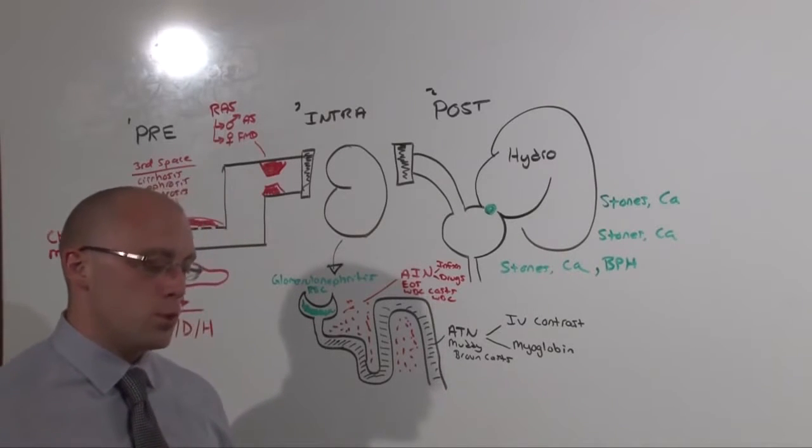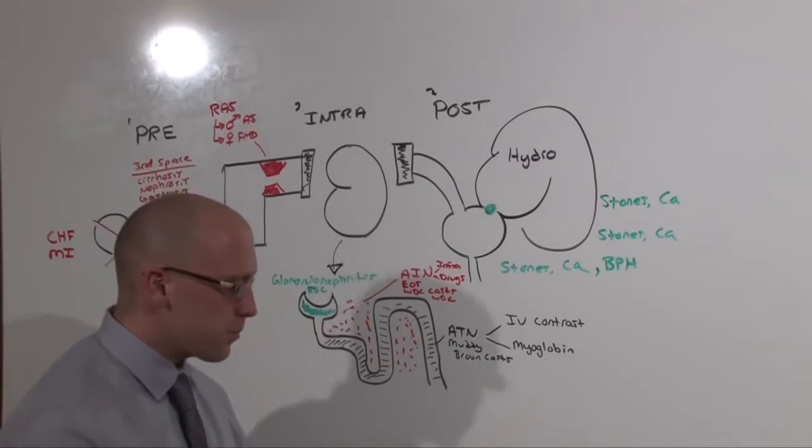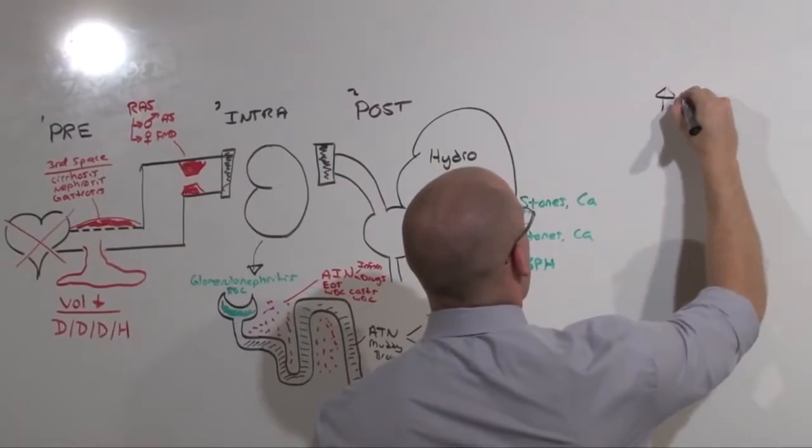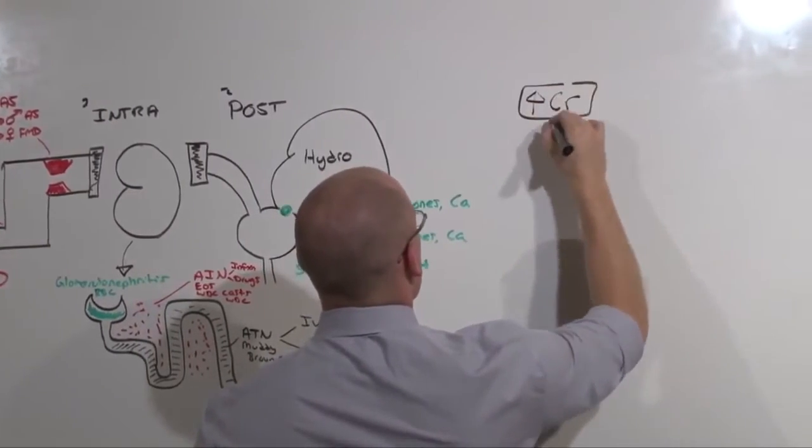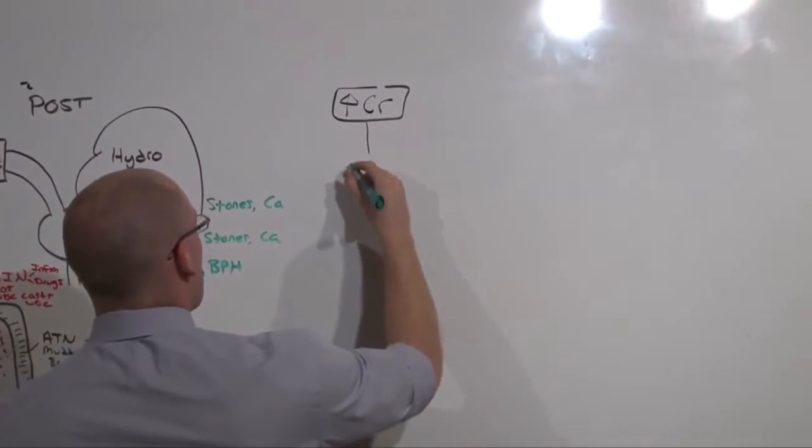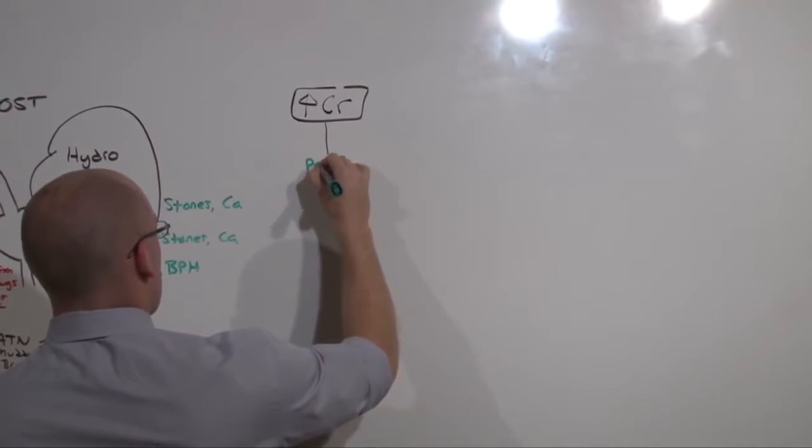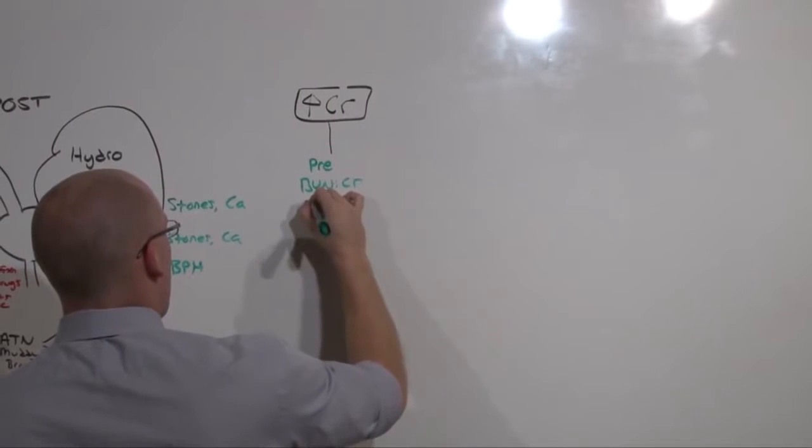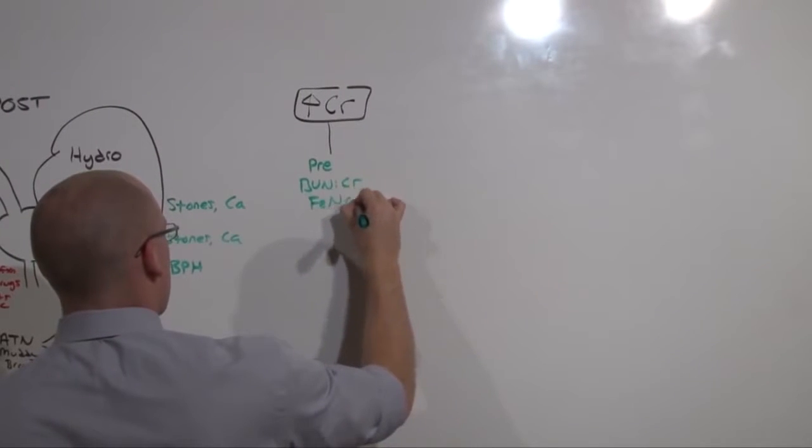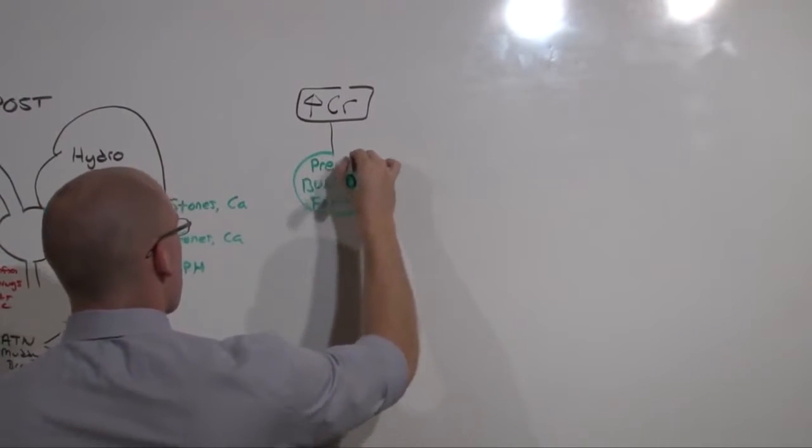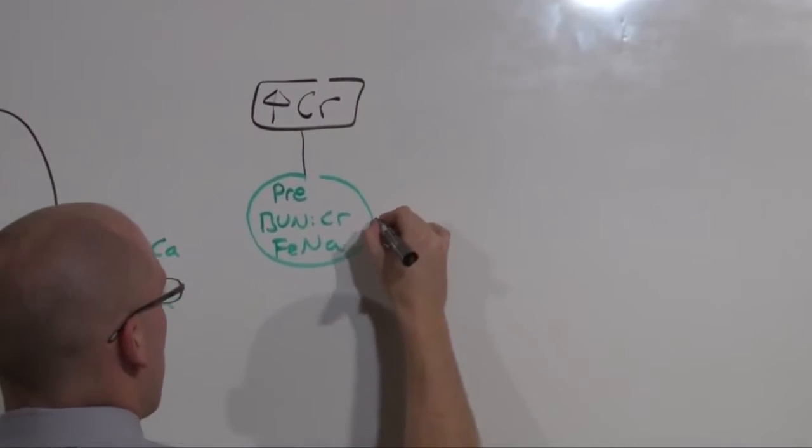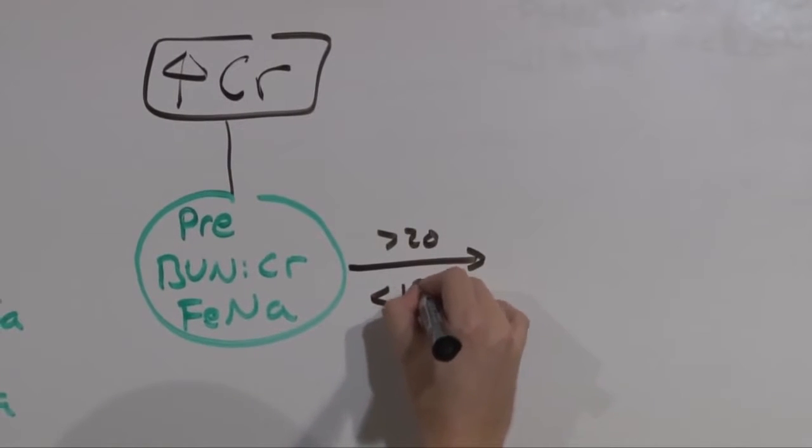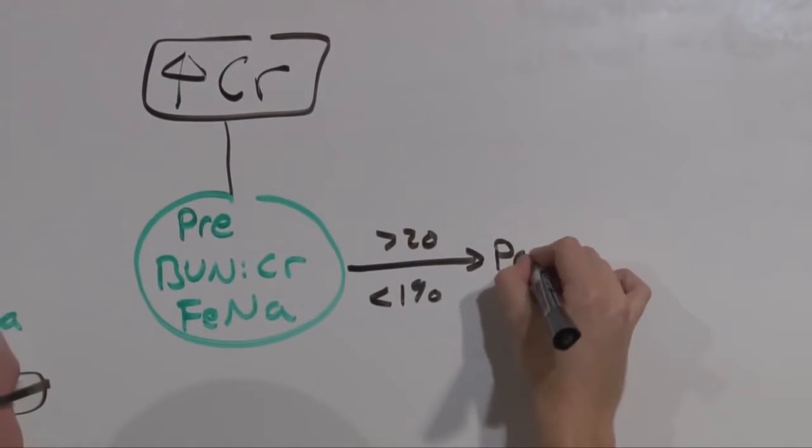This is how people usually approach this. They find someone who's got an elevated creatinine. And what they do is, first step, rule out pre-renal disease. And you do that with a BUN to creatinine ratio and a FENA. If the BUN to creatinine ratio is greater than 20 and the FENA is less than 1%, they say it's pre-renal disease.